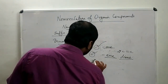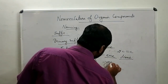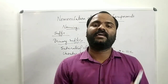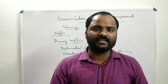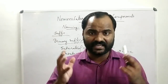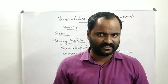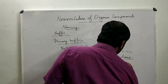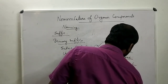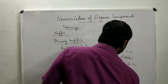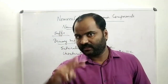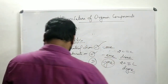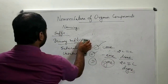In the case of triple bond compounds, we use the suffix YNE. Alkynes are triple-bonded compounds, so we get ethyne, propyne, butyne, pentyne, hexyne. If there are two triple bonds, we use DIYNE — meaning two triple bonds. That is all about the primary suffix.